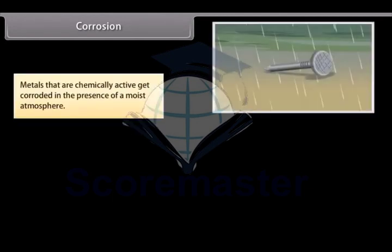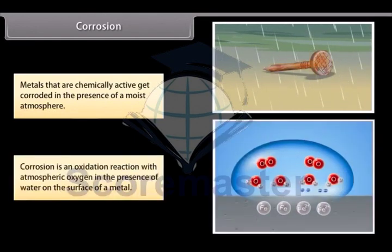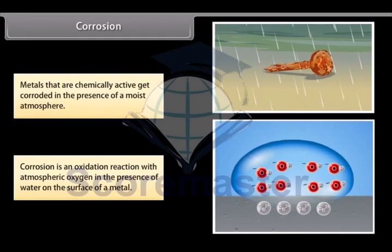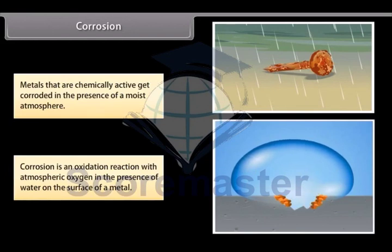Corrosion. Metals that are chemically active get corroded in the presence of a moist atmosphere. Corrosion is an oxidation reaction with atmospheric oxygen in the presence of water on the surface of a metal. For example, iron and aluminium corrode. However, non-reactive metals like gold, platinum, mercury do not corrode.